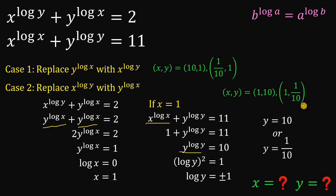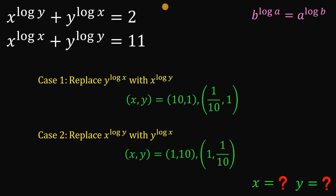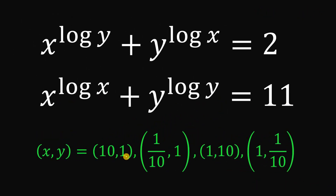And that is our answer to this question. Therefore, given the two equations — x raised to the power of logarithm of y plus y raised to the power of logarithm of x equals 2, and x raised to the power of logarithm of x plus y raised to the power of logarithm of y equals 11 — we found four valid solutions for (x, y): (10, 1), (1/10, 1), (1, 10), and (1, 1/10). And as always, we are done.